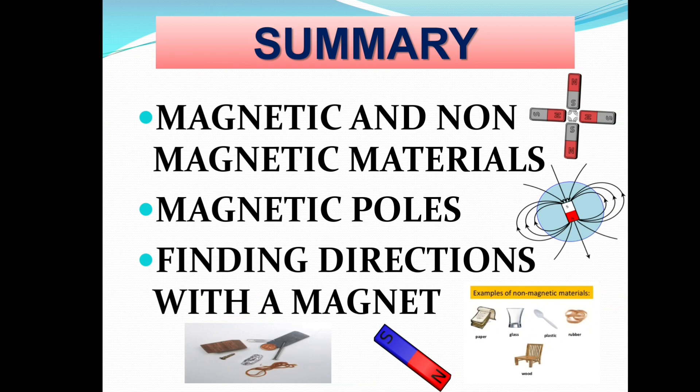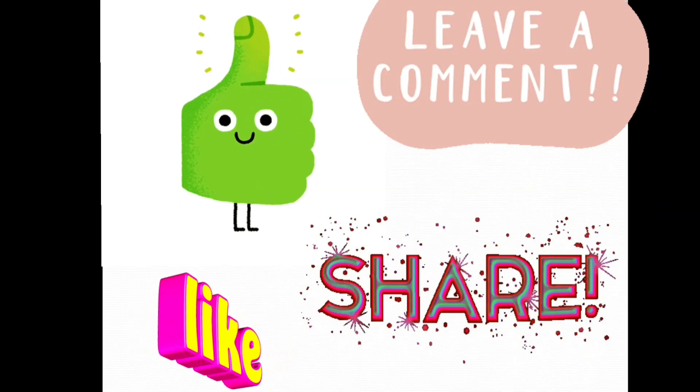Summary of the video. We discussed magnetic and non-magnetic materials. Magnetic materials are substances attracted by a magnet; examples are iron, nickel, and cobalt. Non-magnetic substances are not attracted by a magnet; examples include plastic and rubber. We also discussed magnetic poles and finding directions with a magnet. This is to be continued.